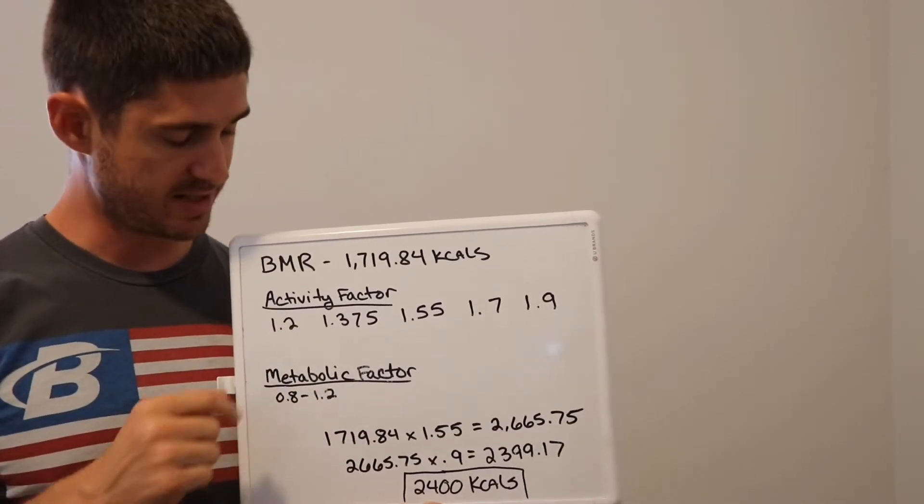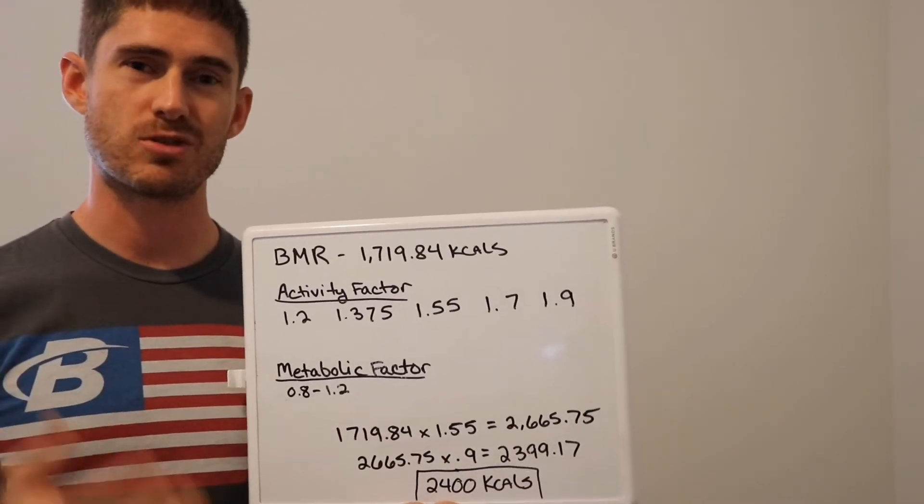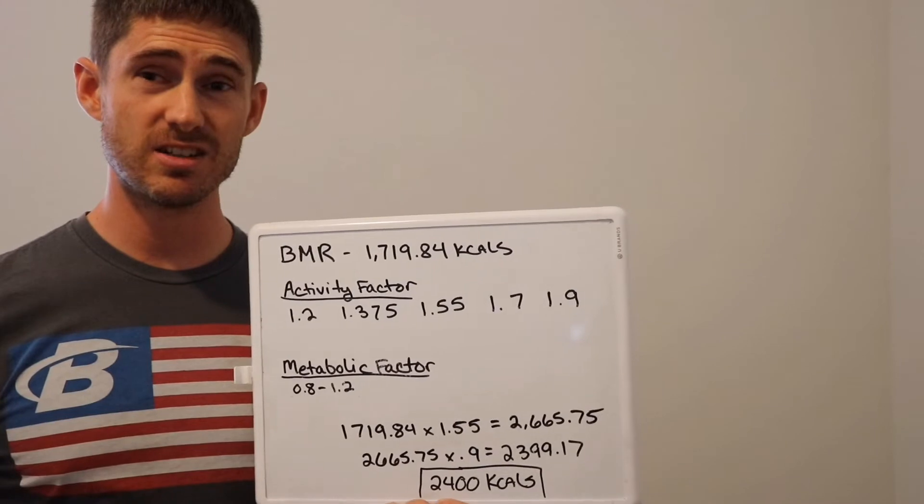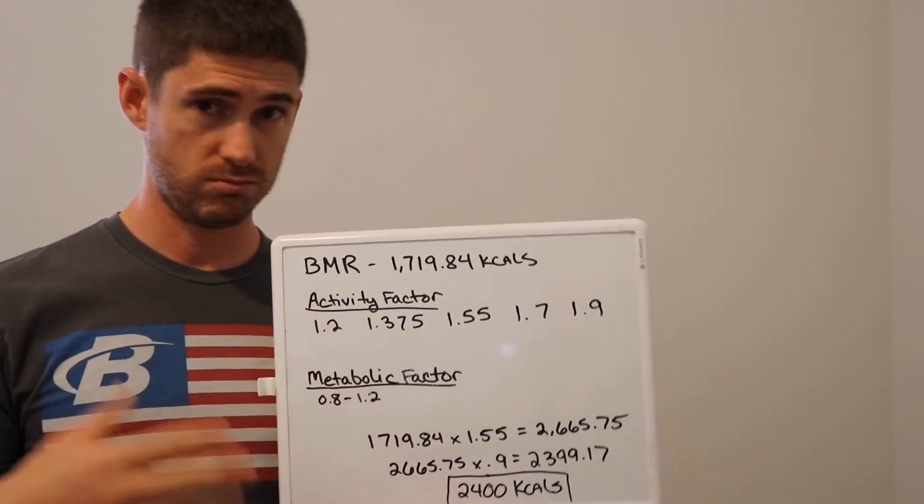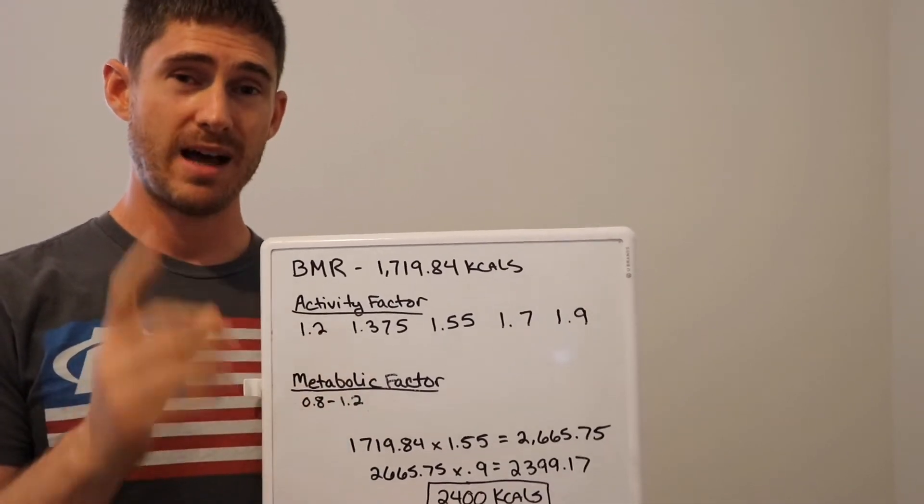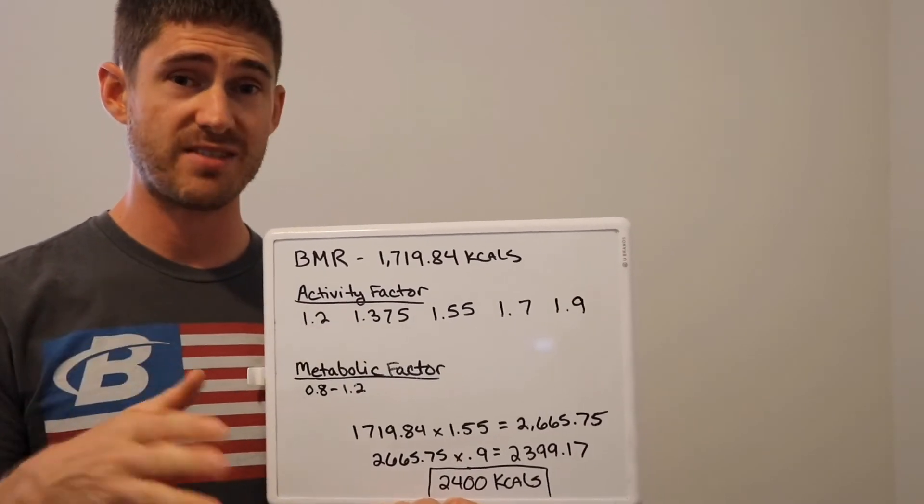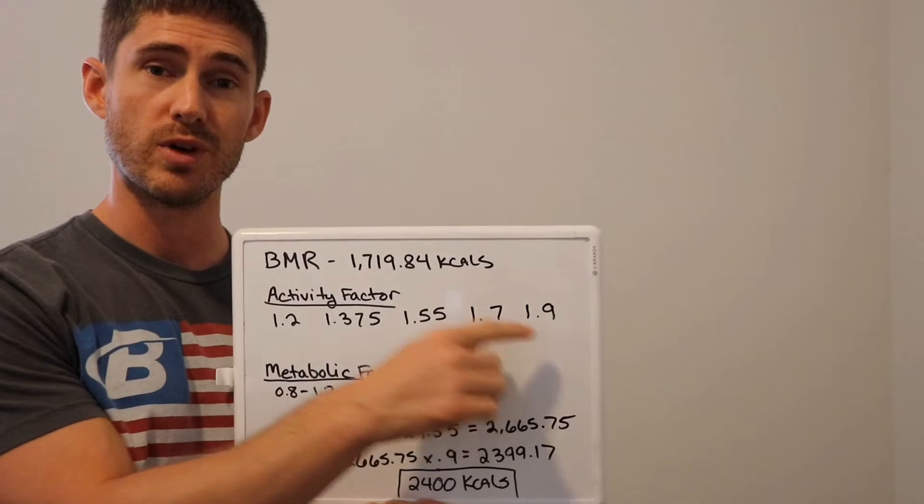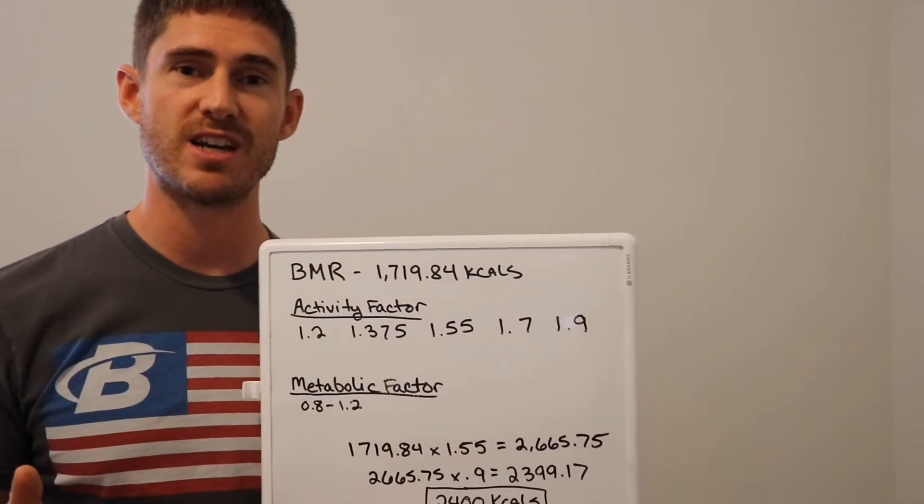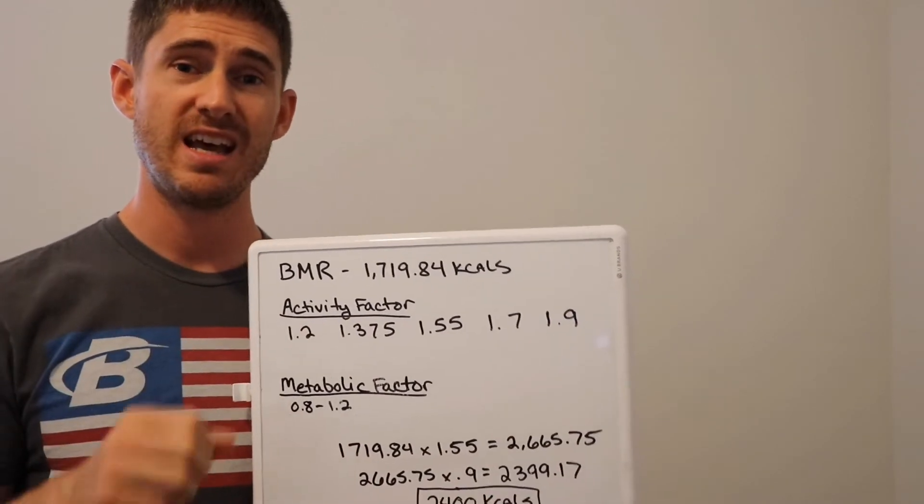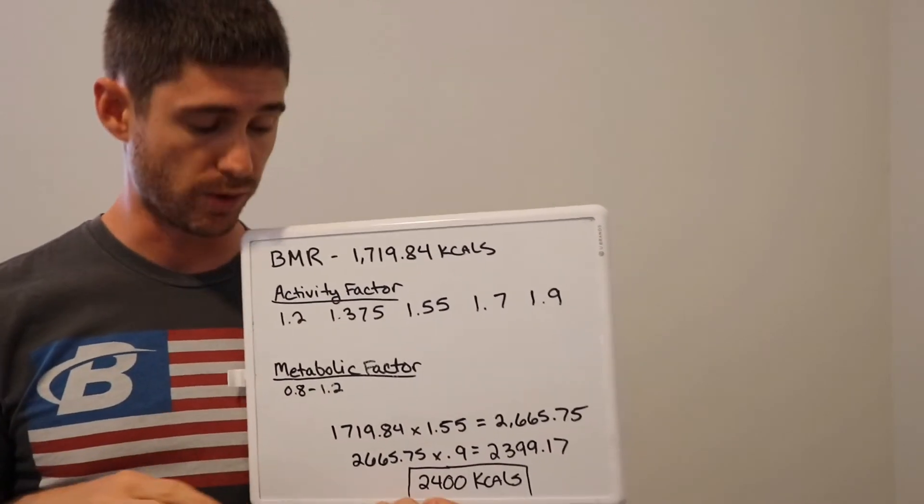Let's say because I do online coaching, because my job, my school, everything requires a lot of sitting during the day, I'm going to put my activity factor for just daily stuff at 1.2. However, my training is very intense. It's hard. I do it five, six days a week. I'm going to put that at a 1.9. So that's going to even out to that 1.55 that I just talked about, and that's what I'm going to use as the activity factor for this example moving forward.